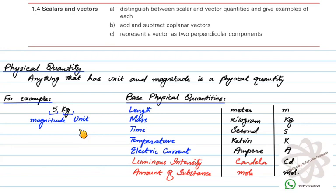For example, if you quote 14 years of age, 14 is the magnitude and years is the unit. Anything that can be measured and has a unit is called a physical quantity. What is not a physical quantity? For example, emotions — you cannot tell anyone how much angry or happy you are today compared to yesterday. You can only give a qualitative analysis. You cannot assign a magnitude to happiness, so emotions are not a physical quantity.